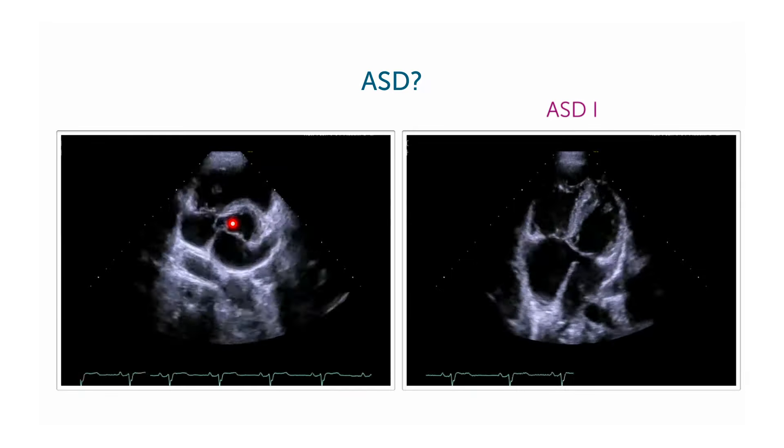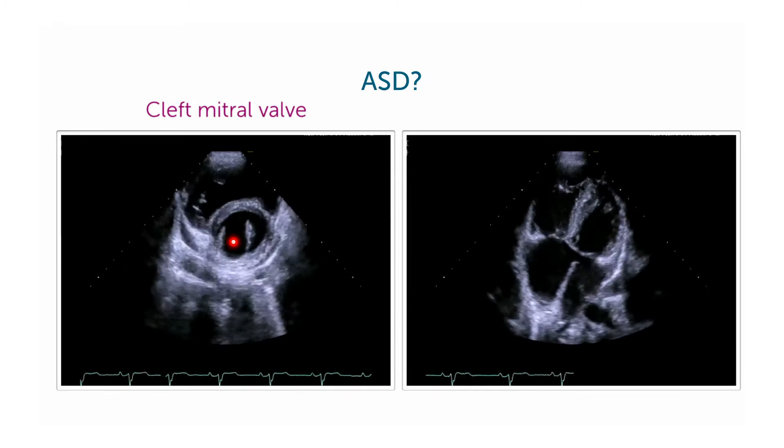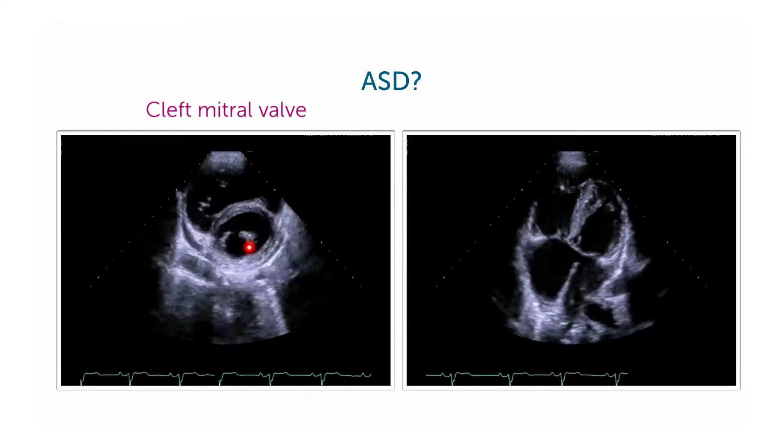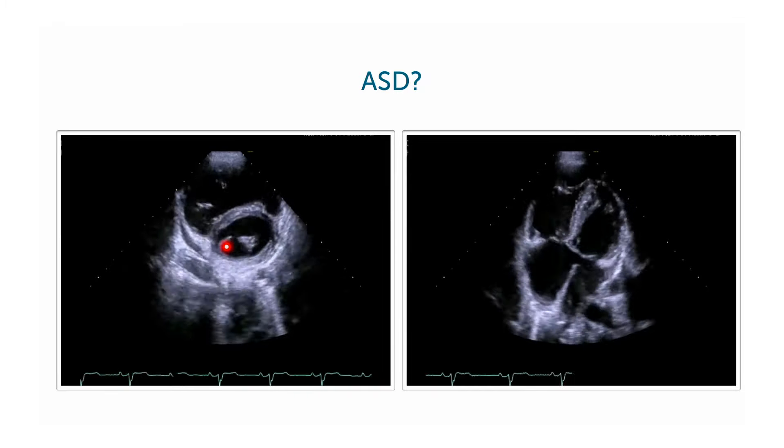What we see here is simply the cleft mitral valve. You see the anterior leaflet has a cleft right here.